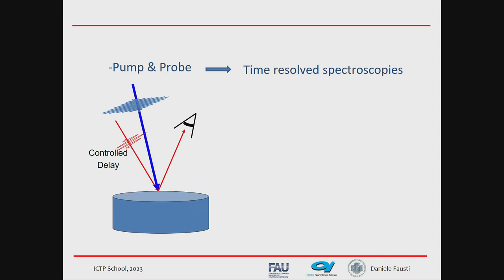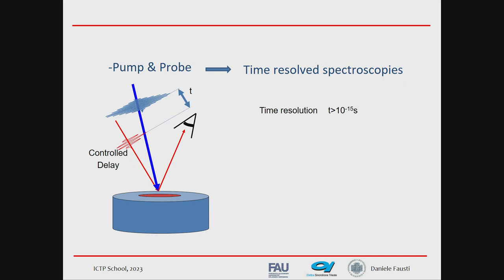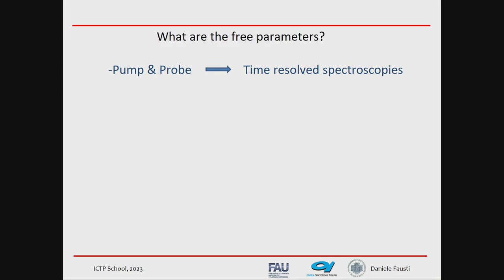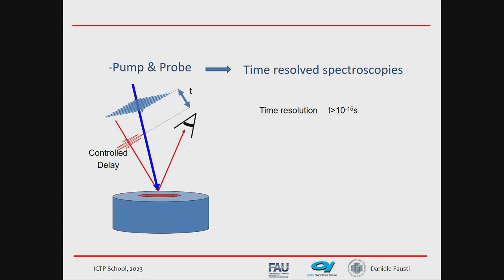We use light pulses in pairs: one pulse to induce a dynamical response in the material, and the second pulse to measure at a given delay how the material evolves in time. The typical time scales on which we study the dynamical response are on the order of 10⁻¹⁵ to 10⁻¹⁴ seconds. The general concept of pump and probe spectroscopy is to use light on one hand to perturb the material and on the other to measure it.